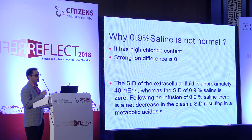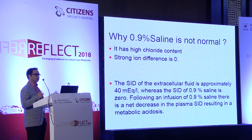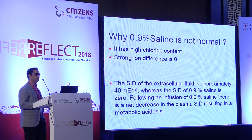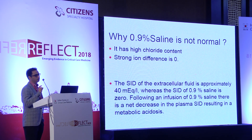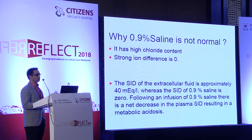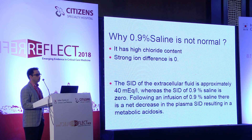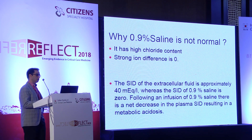If you see the physiological rationale of normal saline — 0.9% saline is not normal. There is the Stewart approach for acid-base balance. Normal saline has a high chloride content. There is something called strong ion difference (SID), which is the difference between strong cations and strong anions. SID is 0 for normal saline, whereas the SID of extracellular fluid is around 40, equivalent to that of balanced crystalloids. Following infusion of 0.9% saline, there is a decrease in plasma strong ion difference near to 0, causing normal anion gap hyperchloremic metabolic acidosis.